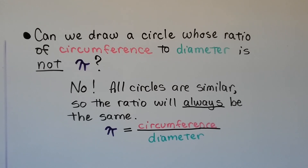Can we draw a circle whose ratio of circumference to diameter is not pi? No. All circles are similar, so the ratio will always be the same. Pi will always equal the quotient of the circumference and diameter.